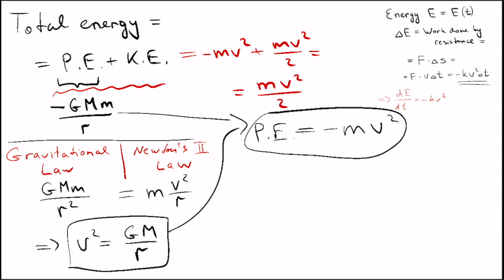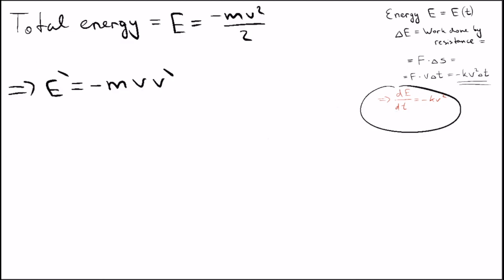We can differentiate it and set it equal to an alternative expression of a derivative that we found earlier. We see that the derivative of the speed is always positive.